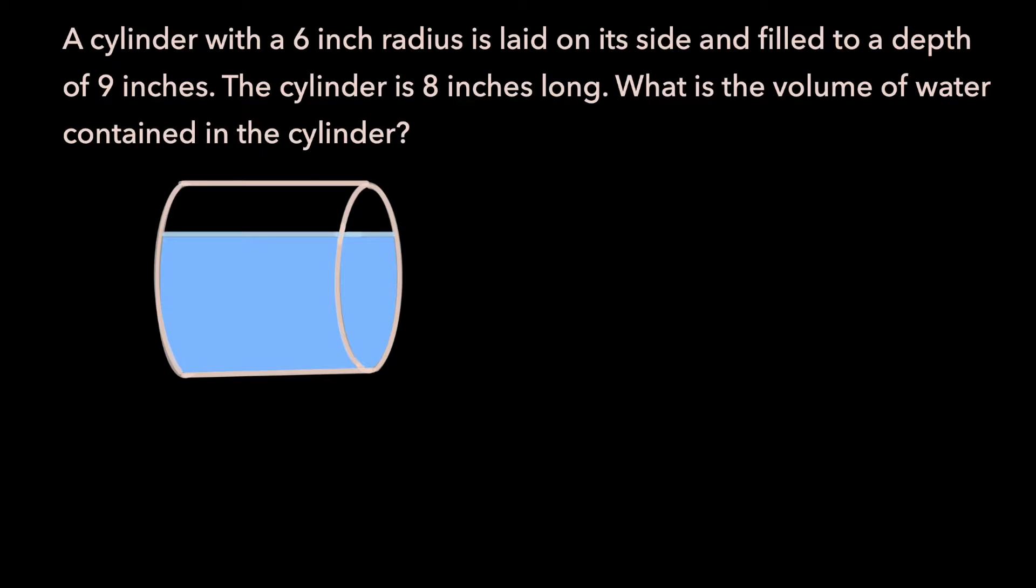Since the three-dimensional shape the water forms inside the cylinder is uniform throughout, we can calculate its volume by taking the area of its base and multiplying by its height. In this case, the cylinder is on its side, so the height is this length right here.